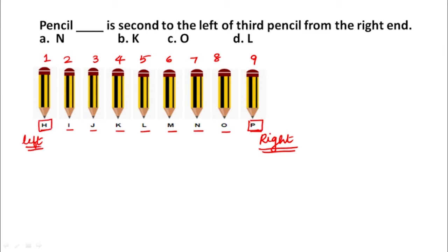What are they asking? Which pencil is second to the left of the third pencil from the right end? Now that we know the pencil at the right end is P — P is the first pencil from the right end, O is the second pencil from the right end, and N is the third pencil from the right end. So which is the third pencil from the right end? It is N.